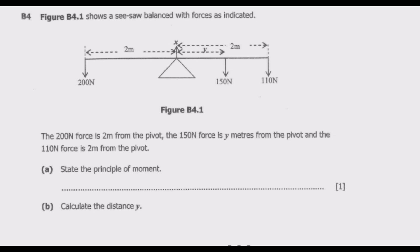Figure B4.1 shows a seesaw balance with forces as indicated. The 200 Newtons force is 2 meters from the pivot, the 150 Newtons force is Y meters from the pivot, and the 110 Newtons force is 2 meters from the pivot. The question asks us to state the principle of moments.